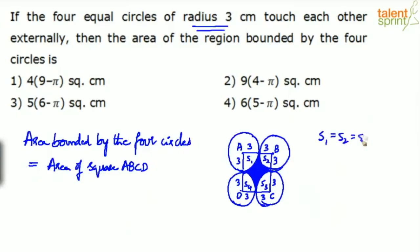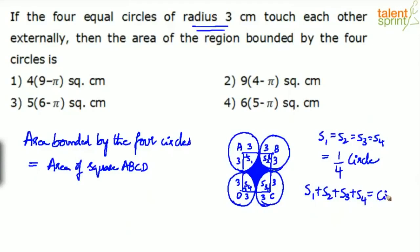S1 equals S2 equals S3 equals S4 — all four are like quarter circles, one-fourth of a circle. The angle at each corner is 90 degrees, so these are all quarter circles. S1 plus S2 plus S3 plus S4 will be equal to one complete circle of radius 3 centimeters. One quarter, the other quarter, third quarter, and the fourth — all four together give you one full circle.